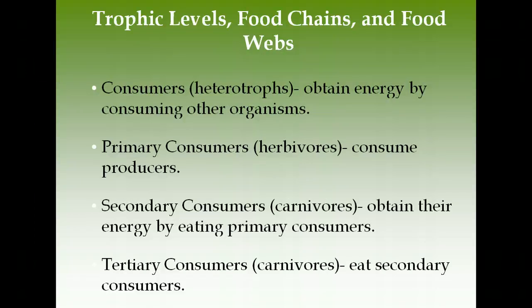Consumers are also called heterotrophs — they obtain energy by consuming other organisms. Primary consumers are herbivores that eat producers or plants. Secondary consumers are carnivores that eat the primary consumers. Tertiary consumers are at the top of the food chain and can be carnivores or omnivores, eating both secondary consumers and producers.